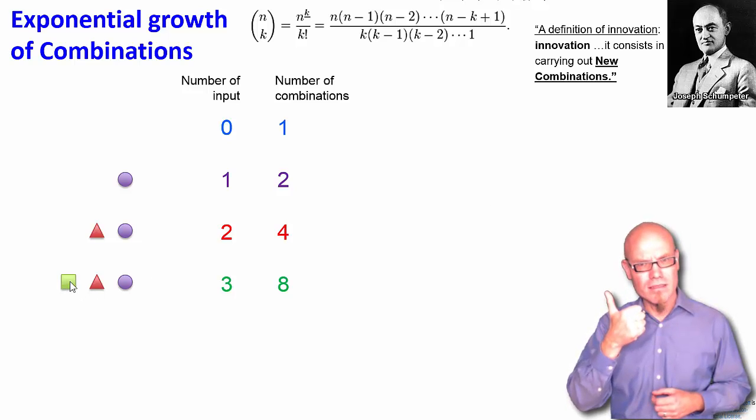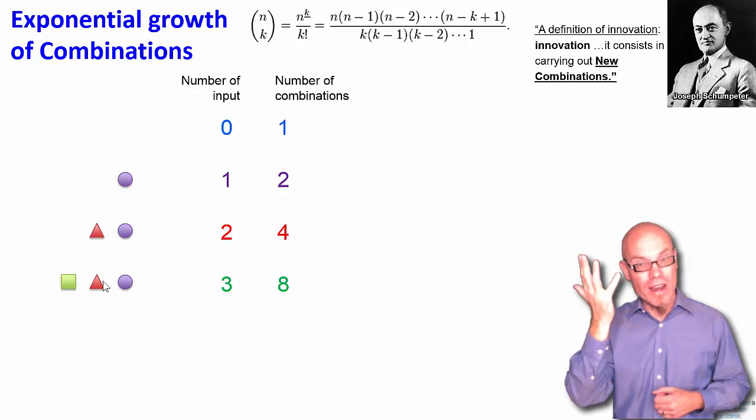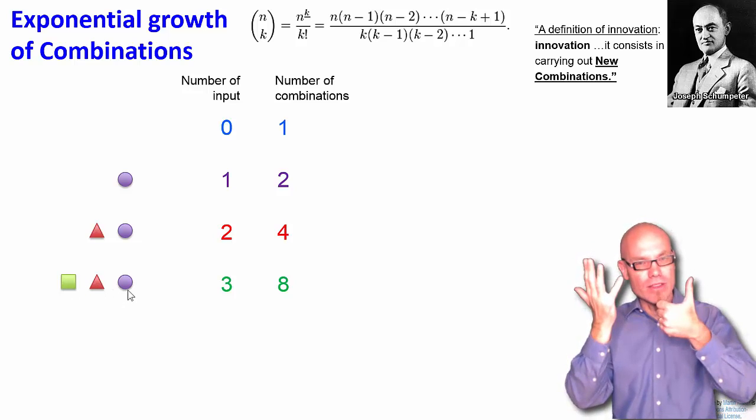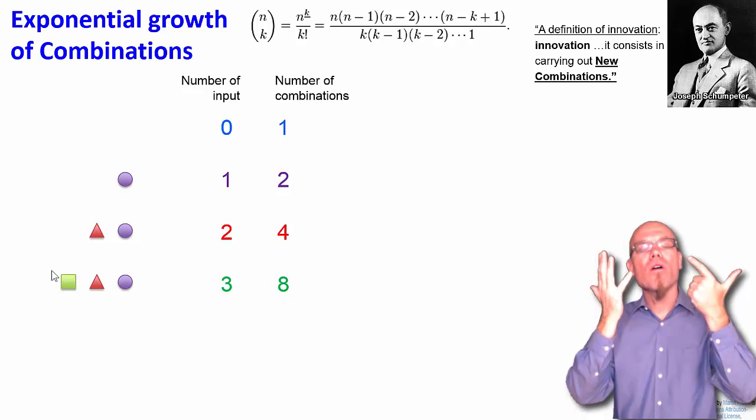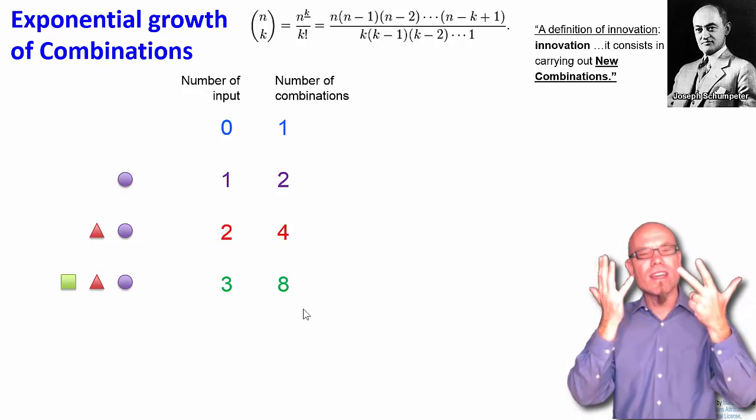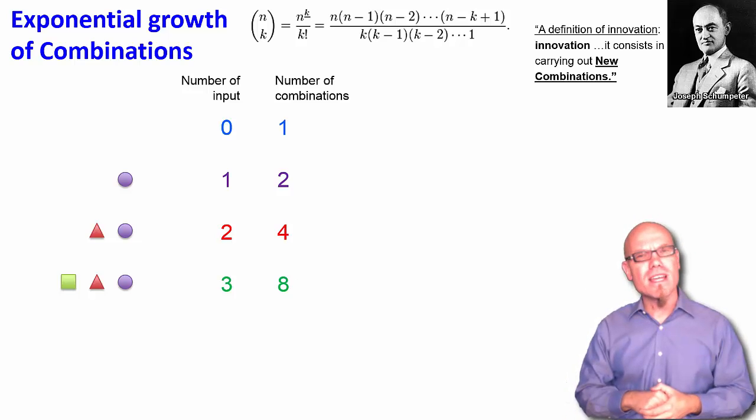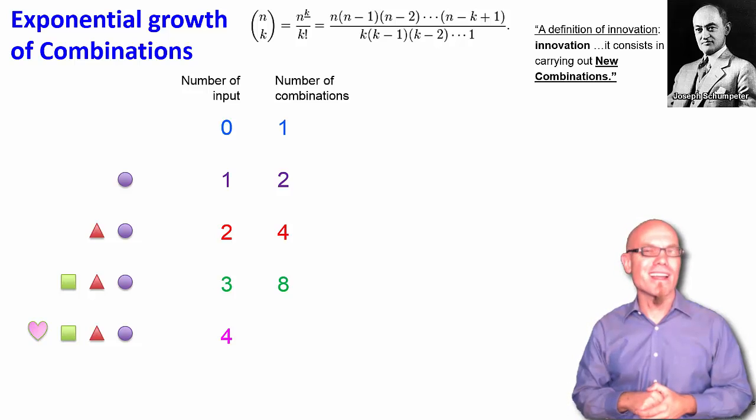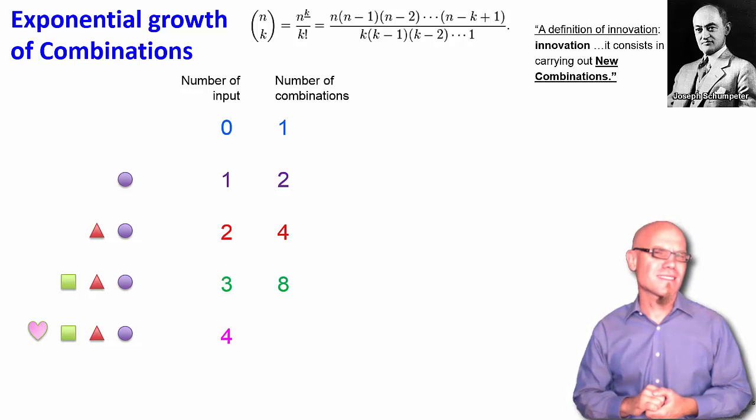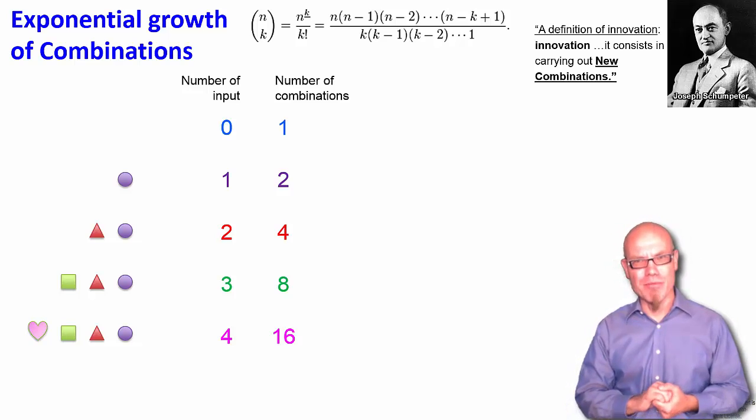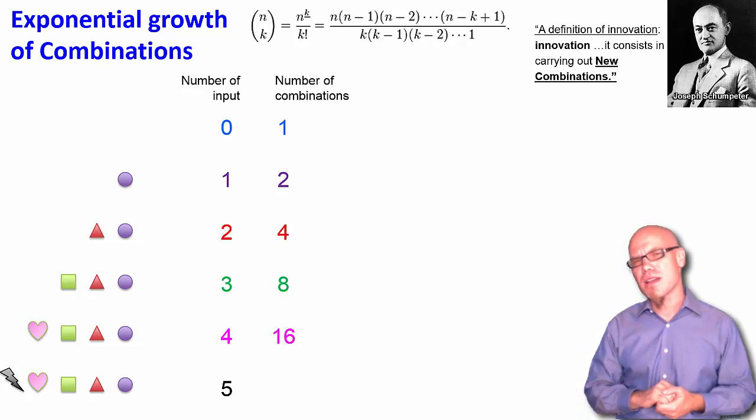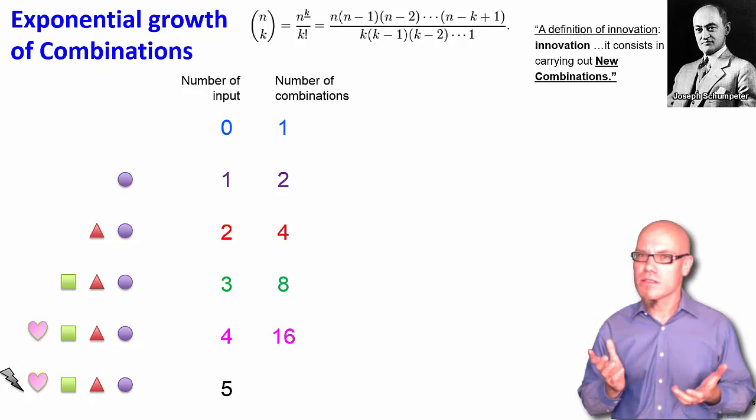Well, we can either take nothing, we can take the square, the triangle or the circle, we can take the square and the triangle, we can take the square and the circle, and we can take the triangle and the circle, or we can take all three of them. So there are eight possible combinations that we can do with three inputs. Now let's say we have four inputs, a heart, a square, a triangle and a circle. How many combinations can we do with those four? Do you want to count them or you want to guess? And now we have five different inputs. How many combinations can we do with them? You're still invited to count or you can also simply guess.